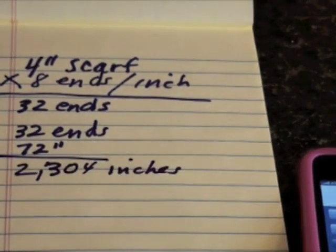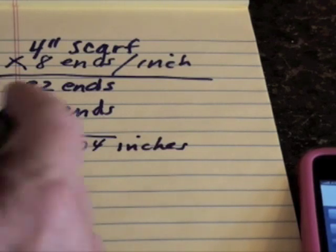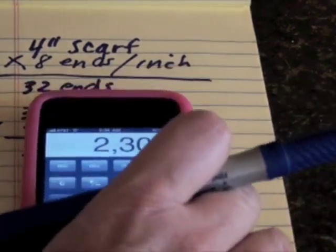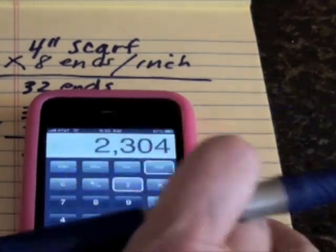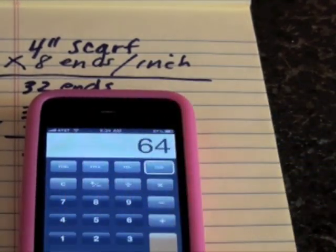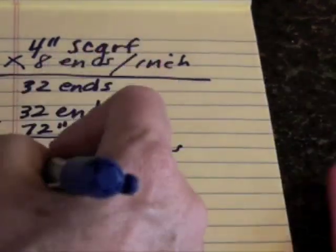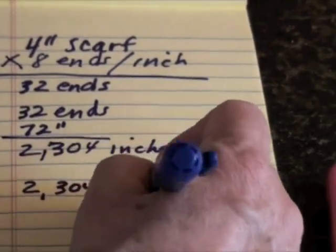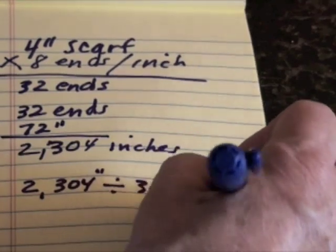But we don't work in inches, we're going to work in yards. So to figure out how many yards that is, I'll simply divide 2,304 by 36. That's 2,304 divided by 36 inches equals 64 yards.